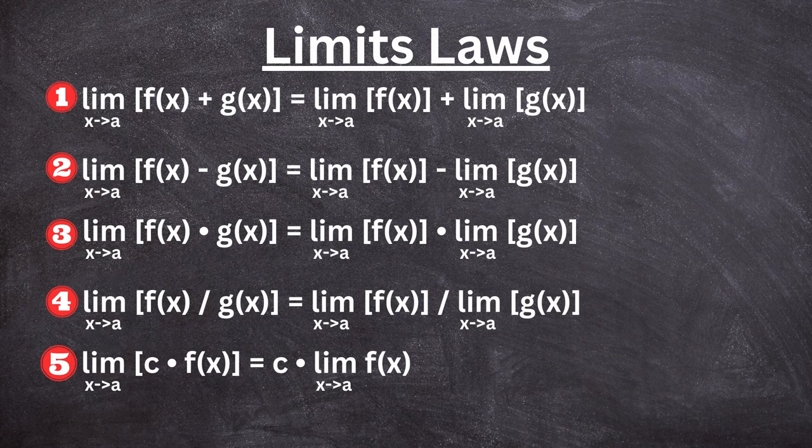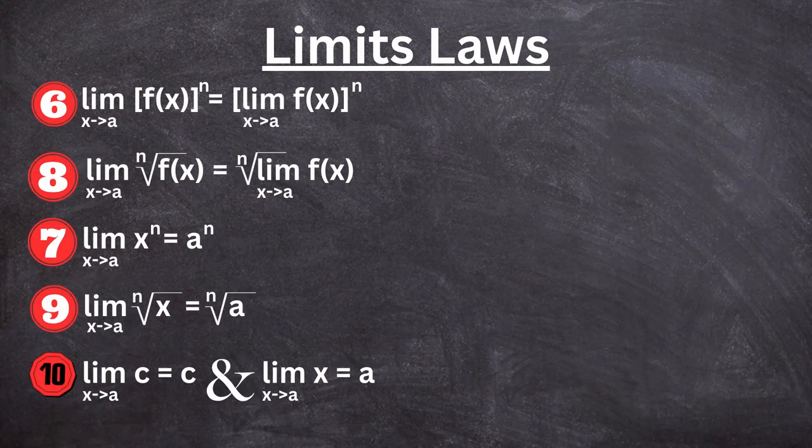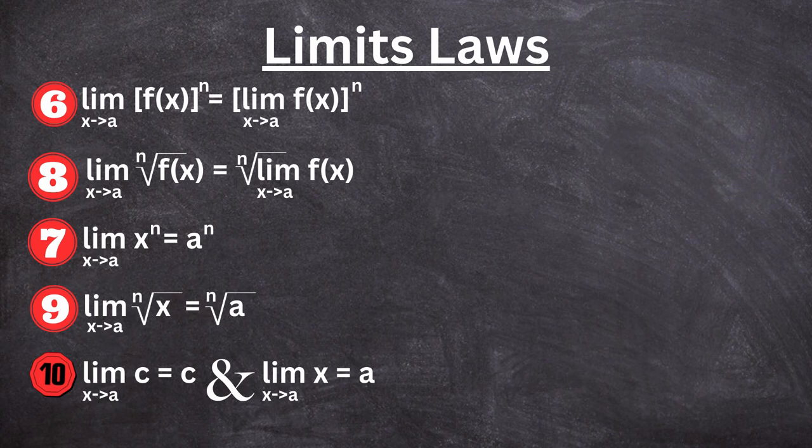The fifth rule suggests that the limit as x approaches a of C times f(x)—so a constant times a function—would be equal to the constant times the limit of the function itself. Now, the rest of the laws apply if the exponent is positive.